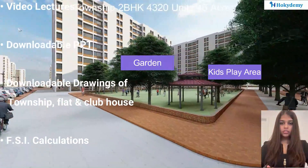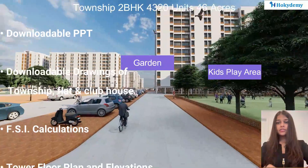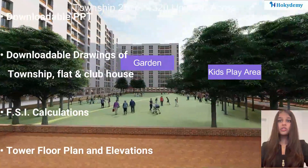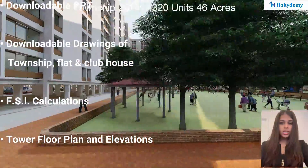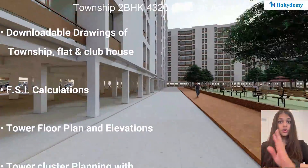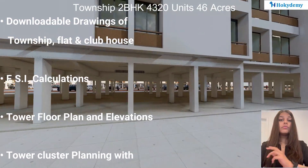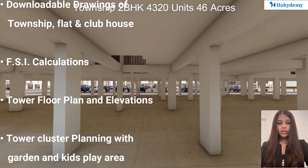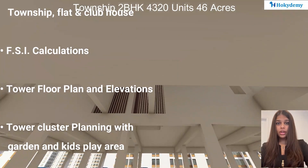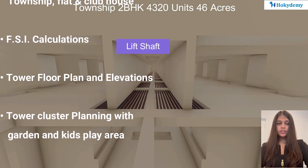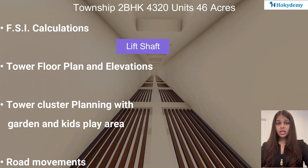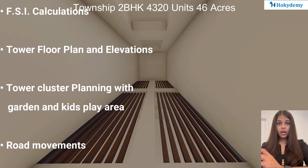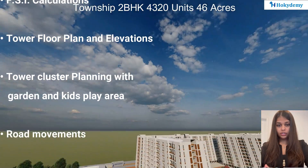There are children's play areas and gardens with gazebos to enjoy morning jogs and evening conversations. There are four different towers with 120 units each, with internal connections of stairways and lifts, lobbies, and common gathering areas within each tower.